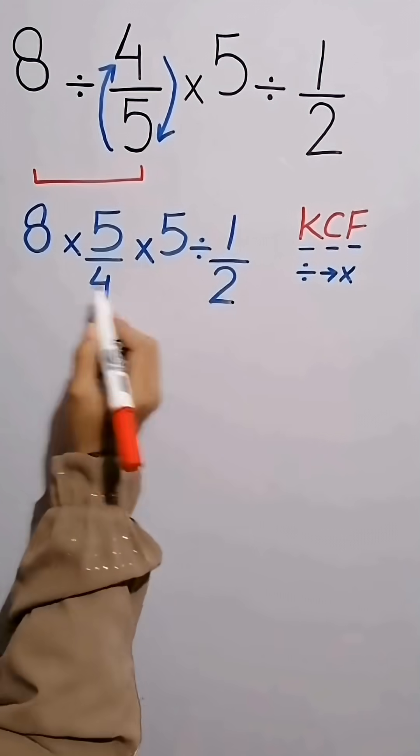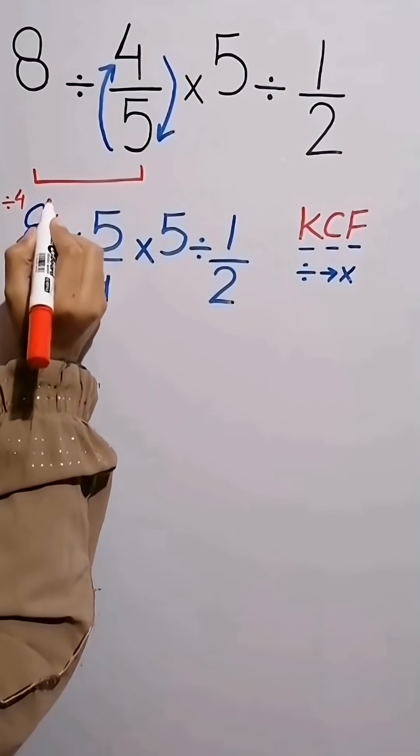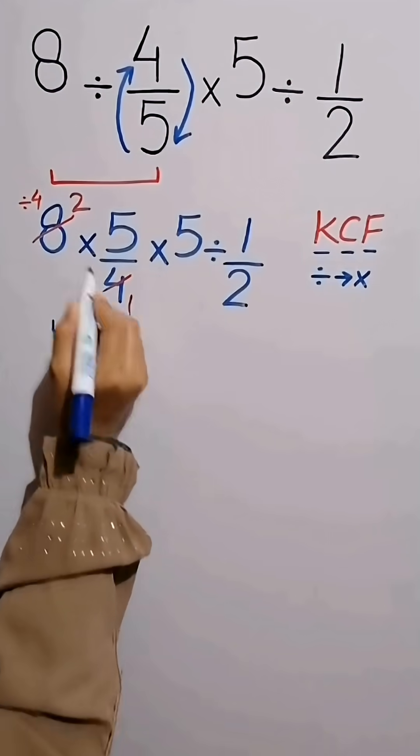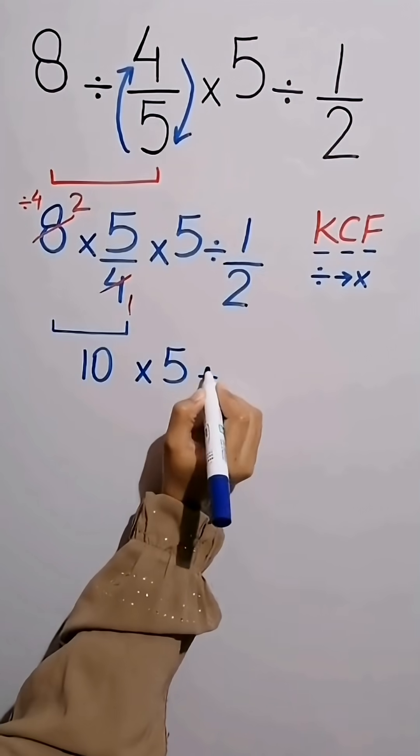Now in this expression both 8 and 4 divided by 4. 8 divided by 4 gives us 2, and 4 divided by 4 gives us 1. Now 2 times 5 equals 10. Then times 5 divided by 1 over 2.